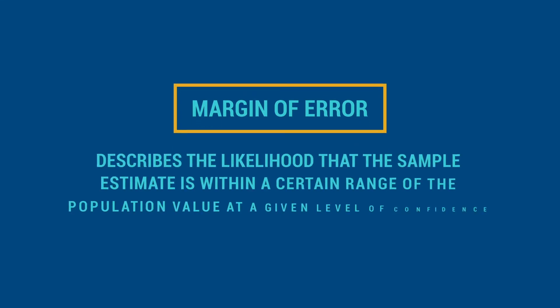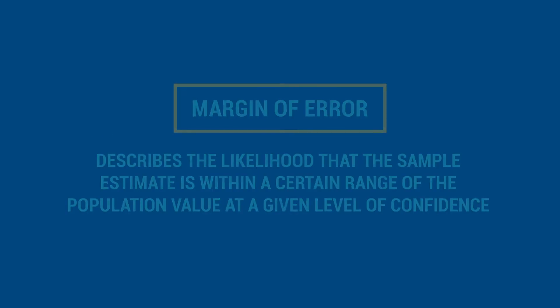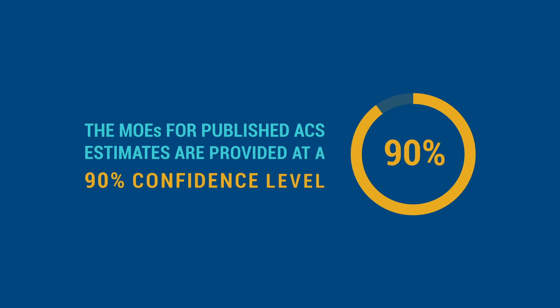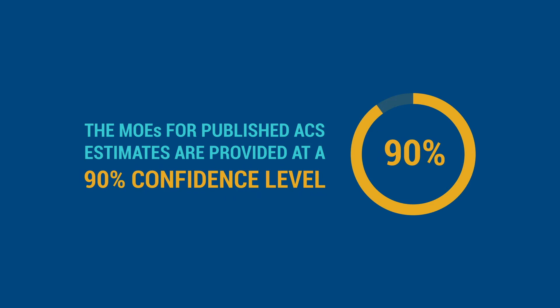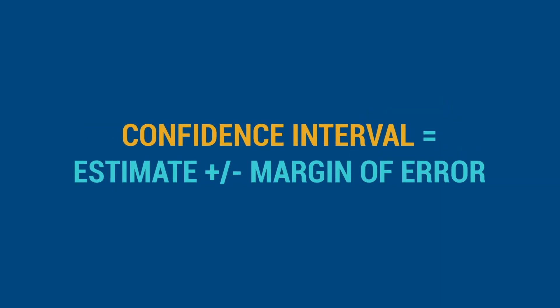The MOE describes the likelihood that the sample estimate is within a certain range of the population value at a given level of confidence. The MOEs for published ACS estimates are provided at a 90% confidence level. From these MOEs, data users can calculate 90% confidence intervals that define a range expected to contain the true population value of an estimate 90% of the time.